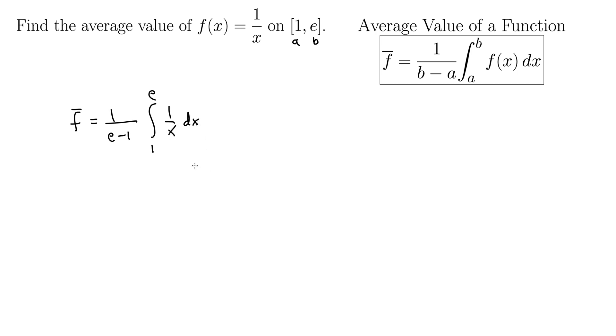Well, we know that the integral of 1 over x is natural log absolute value of x. So this gives 1 over e minus 1 times natural log absolute value of x on the interval 1 to e.